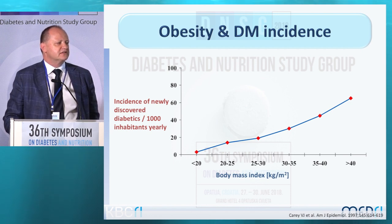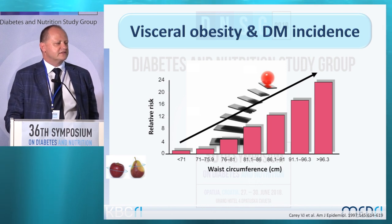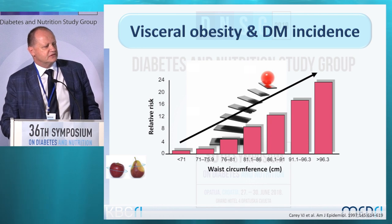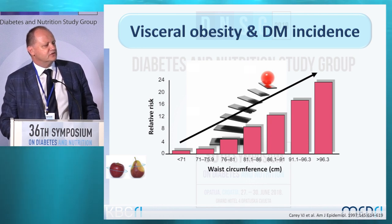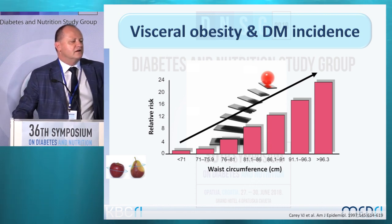Diabetes presents macrovascular complications like cardiovascular and cerebrovascular diseases, as well as peripheral arterial disease, and also microvascular complications like diabetic retinopathy, nephropathy, and neuropathy. We now talk about a phenomenon called 'diabesity' — the combination of diabetes and obesity — two parallel epidemics growing together. Data show that the incidence of newly discovered diabetes is much higher in those with higher BMI. Waist circumference is also a risk factor — diabetes incidence grows with increasing waist circumference.